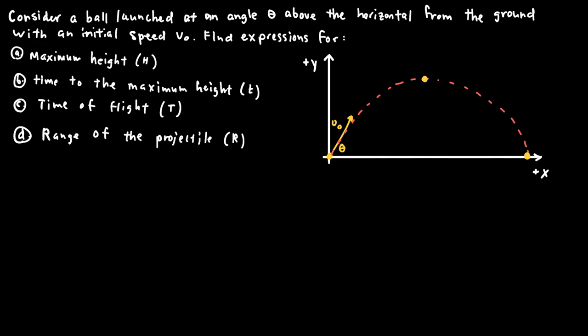For the example, I'll consider a ball launched at an angle above the horizontal with initial speed v-naught. I'd like to find equations for the maximum height, the time to reach the maximum height, the total time of flight, and the range of the projectile. We'll use the kinematic equations to find expressions for these quantities. Starting with part (a): the maximum height h, which occurs at the midpoint of the symmetric parabolic trajectory.